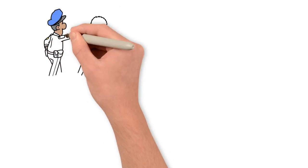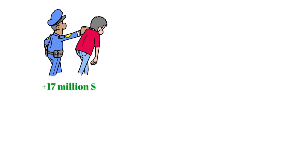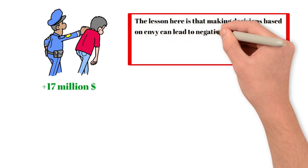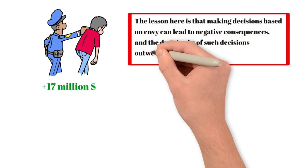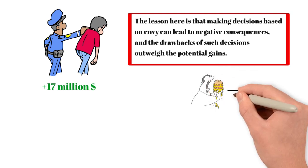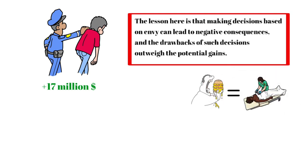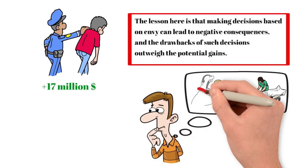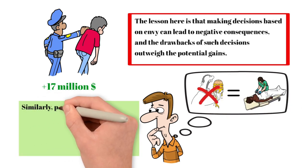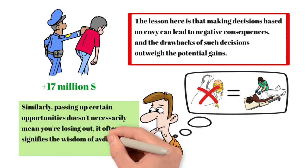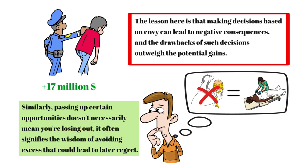By the time prosecutors caught up with him, he'd racked up $17 million in a string of dodgy deals. It hadn't made him a billionaire, but it was enough to earn him a hefty prison sentence. The lesson here is that making decisions based on envy can lead to negative consequences, and the drawbacks of such decisions outweigh the potential gains. Consider it like having an insatiable appetite. You might eat until you're sick. However, the aftermath of getting sick is far worse than the satisfaction from any meal, so you avoid overindulging. Similarly, passing up certain opportunities doesn't necessarily mean you're losing out. It often signifies the wisdom of avoiding excess that could lead to later regret.